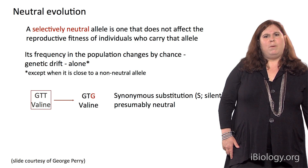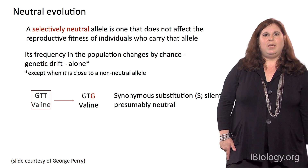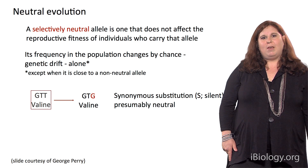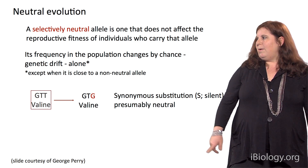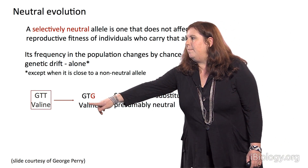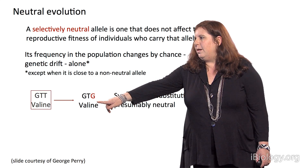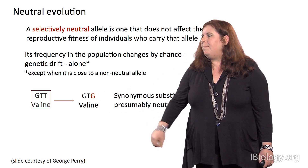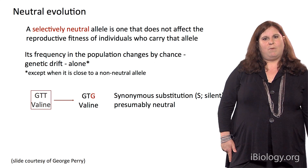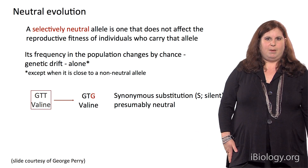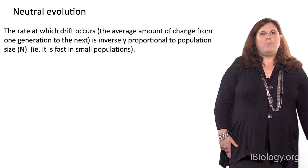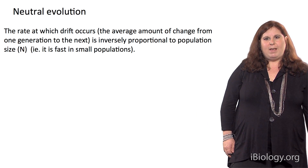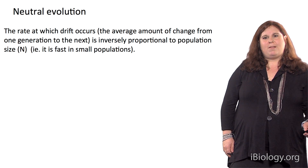I also want to define neutral evolution. A selectively neutral allele is one that does not affect the reproductive fitness of individuals who carry it — its frequency changes by chance, or genetic drift alone. For example, a substitution in the third position of a codon very typically results in a silent or synonymous change, with no change in the amino acid — it remains as valine. The rate at which genetic drift occurs is inversely proportional to population size n, and it's very fast in small populations.